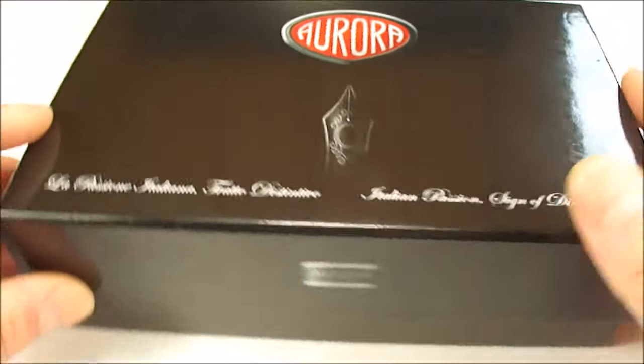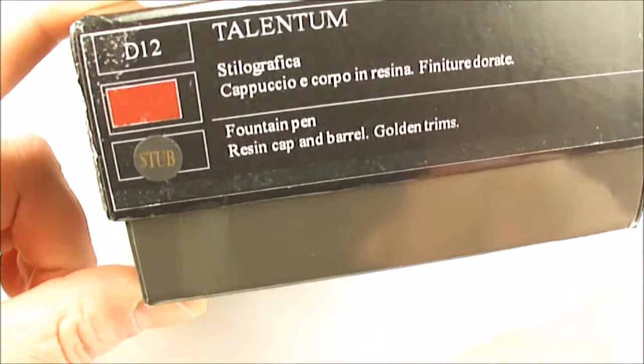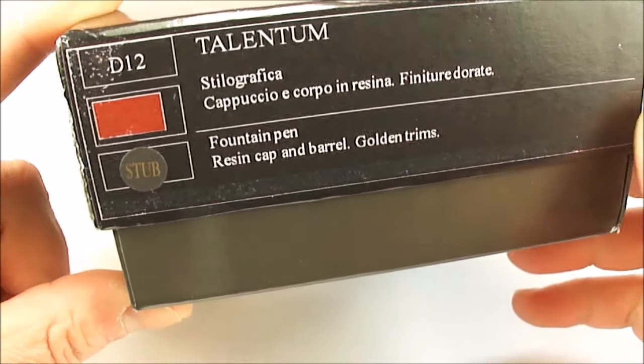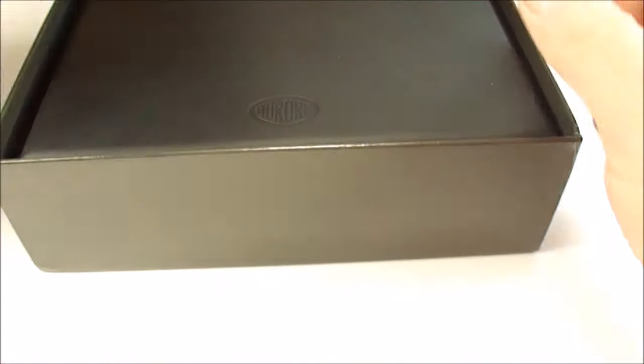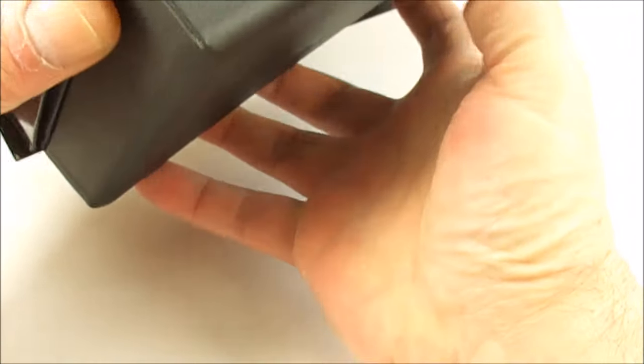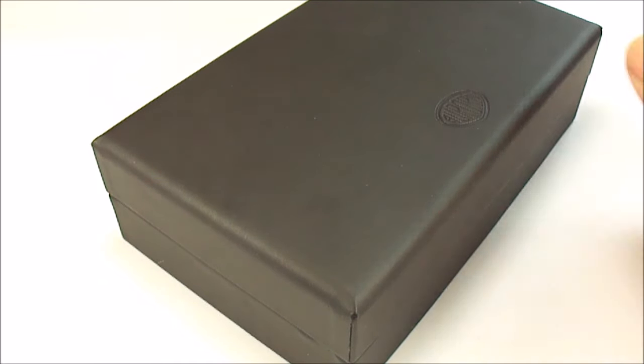As you can see it comes in this lovely outer case and if we show you the sideways view there you can see the model is the Talentum fountain pen. Let's take it out of the outer case, remove the inner box with a little bit of fiddling, and remove this outer case to one side.